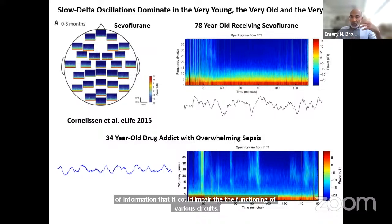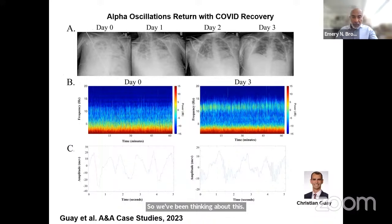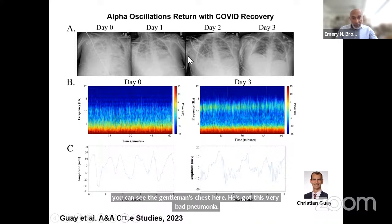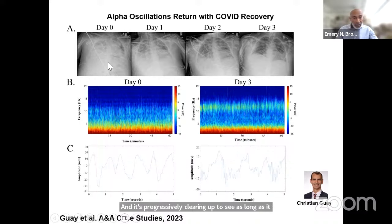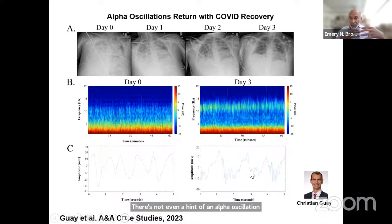The conjecture is that once inflammation is resolved, the oscillations should come back. We recently got clinical evidence of this: a COVID patient taken care of by Christian Gay, one of my clinical postdocs. You can see the gentleman's chest showing very bad pneumonia progressively clearing up. On day zero his EEG shows only slow oscillations. By day three, when his lungs have cleared and infection is much better controlled, his alpha oscillations come back — clearly visible in the time-domain trace. The state of health can dramatically affect the oscillations we see in patients under anesthesia.